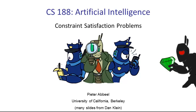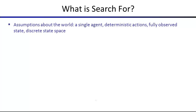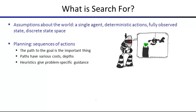We're going to start looking at a new class of problems today called constraint satisfaction problems. So far we've looked at search, which solves problems where you model the world with a single agent. When actions are taken, you assume they're deterministically successful, you have full observation of the world, there's a discrete state space, and the task is to find a sequence of actions that gets you to some goal state.